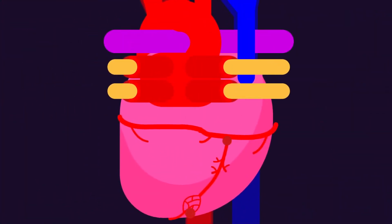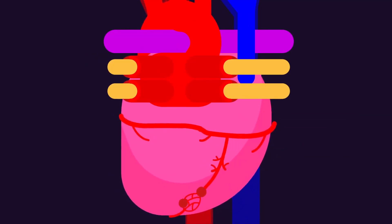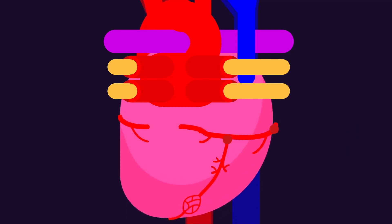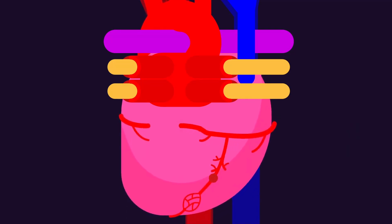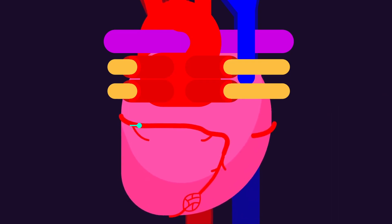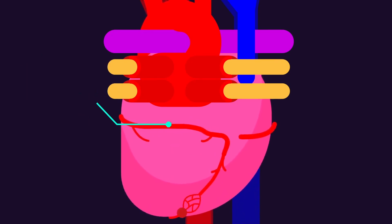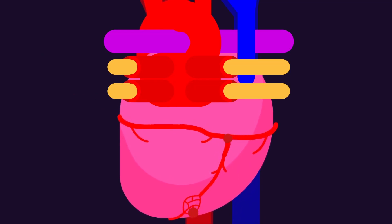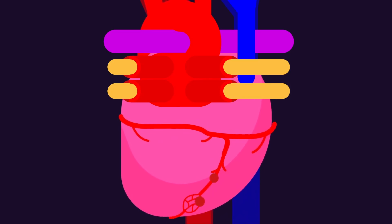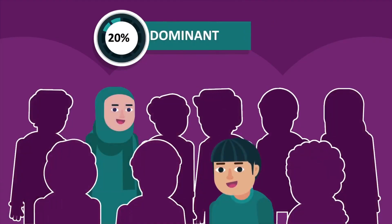Coronary artery dominance is determined by the artery that supplies the posterior aspect of the interventricular septum, or the posterior descending artery. If the posterior descending artery is supplied by the right coronary artery, then the coronary circulation is classified as right dominant. If a branch of the left artery, specifically the left circumflex artery, supplies the posterior descending artery, then the circulation is classified as left dominant. If the posterior descending artery is supplied by both the right coronary artery and the circumflex artery, then it is classified as co-dominant. The population distribution is approximately 70% right dominant, 20% co-dominant, and 10% left dominant.